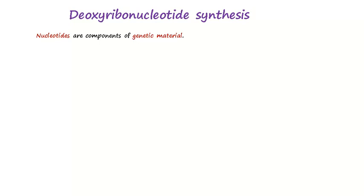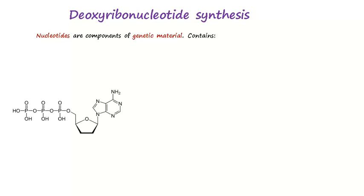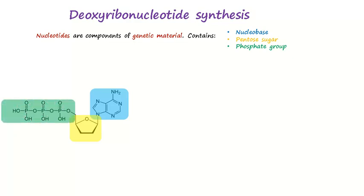Here we have a nucleotide. It contains a nucleobase, which is shown with a blue highlight, a pentose sugar with a yellow highlight, and a triphosphate group shown with the green one.